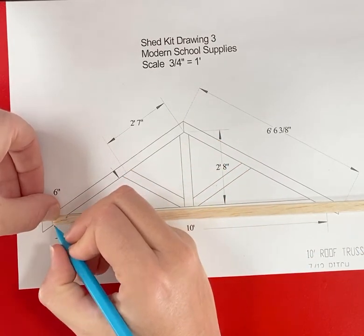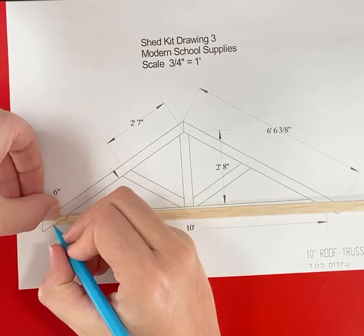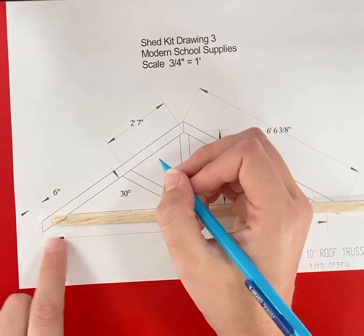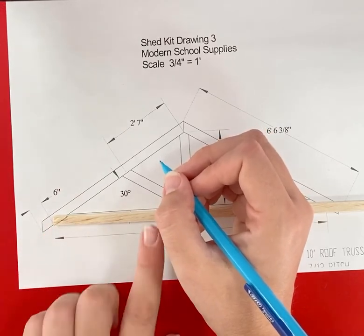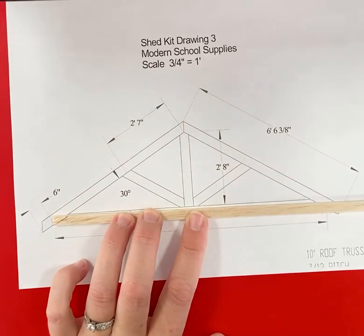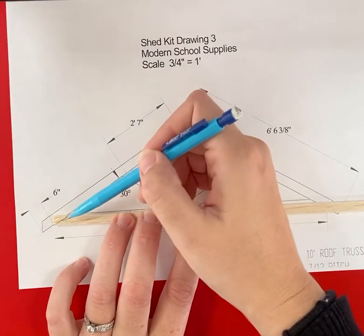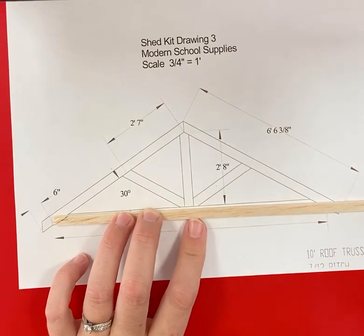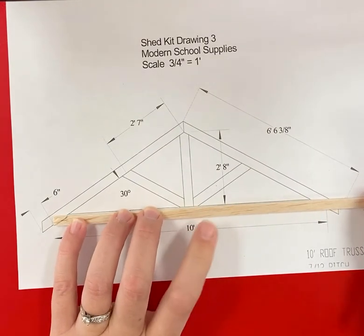Or you could scribe very lightly with your exacto knife, but you want an angle similar to like that, which I think you can see fairly well in the video. Now you just want to make sure you cut to the outside of that line or else it's going to be too short. So that's how you do the left side.